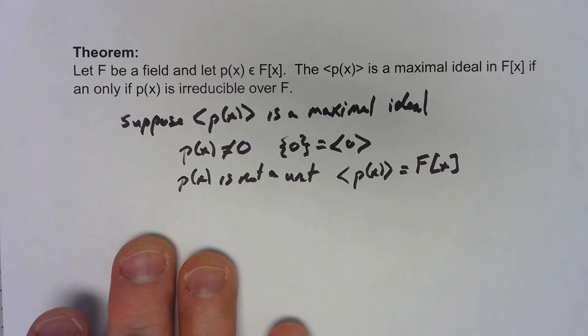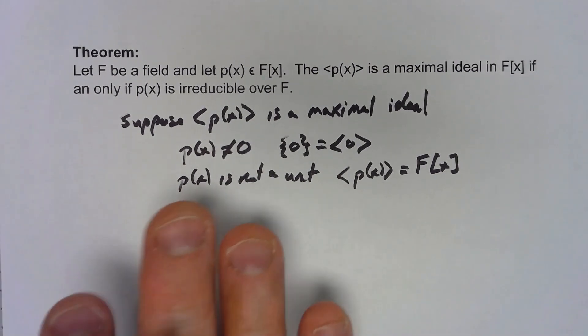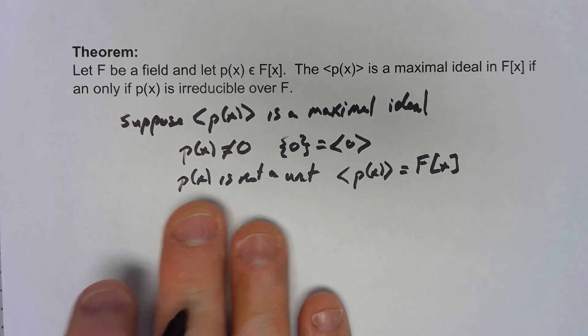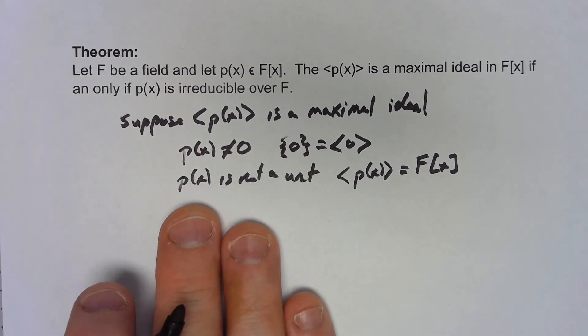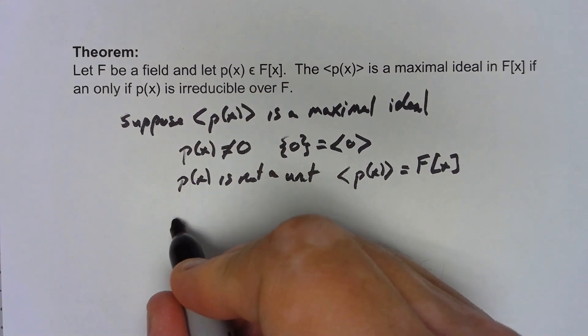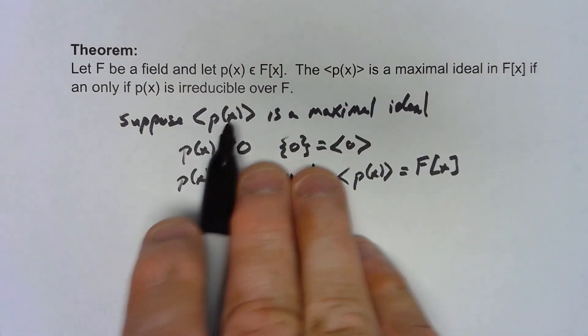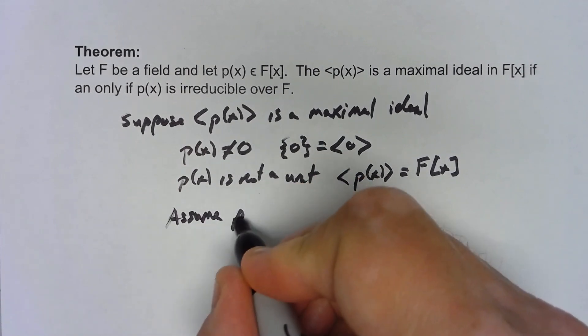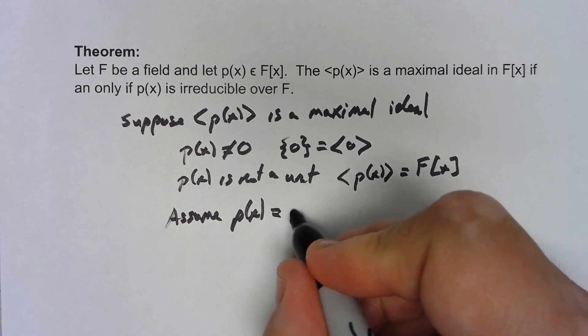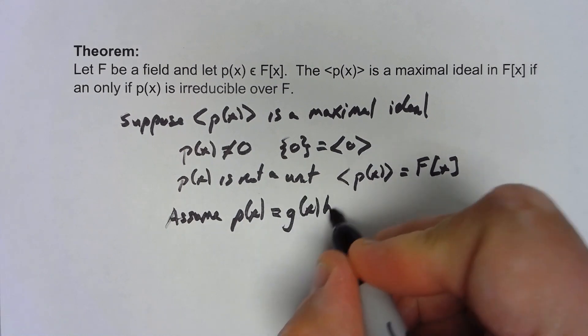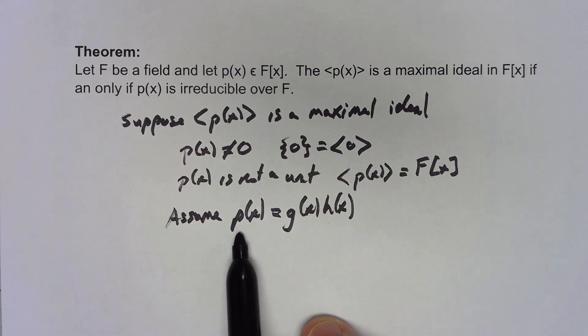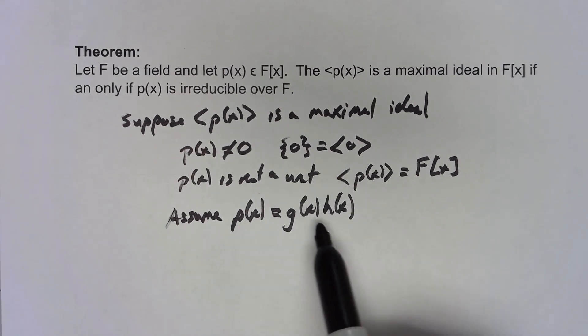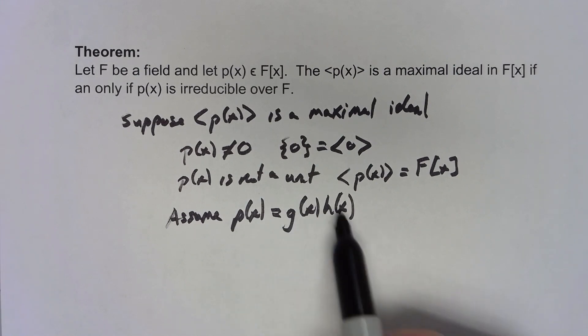Actually that's not quite true, but let's go ahead and let's say that we're trying to say, let's assume p(x) is equal to some g(x) times h(x). To show that p(x) is irreducible we need to show that these things basically have to have positive degree.